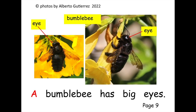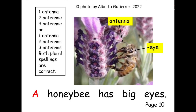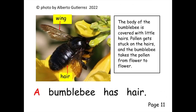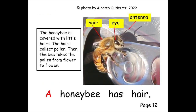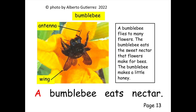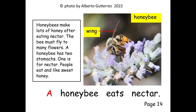A bumblebee has big eyes. A bumblebee eats nectar. A honeybee eats nectar.